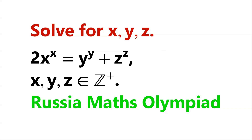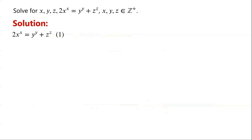Solve this equation, where x, y, and z are positive integers. This is an exponential Diophantine equation. There are three variables in one equation, so there might be more than one solution.